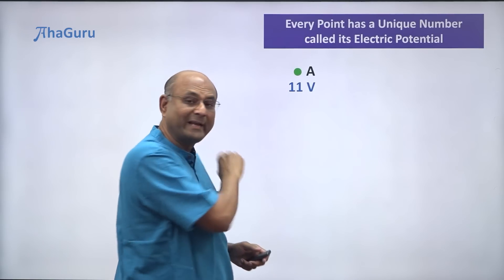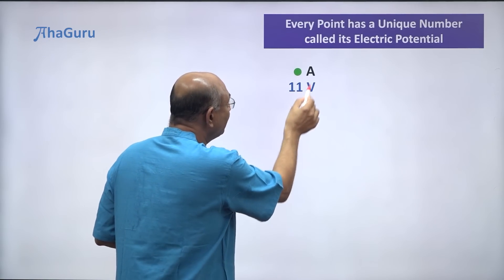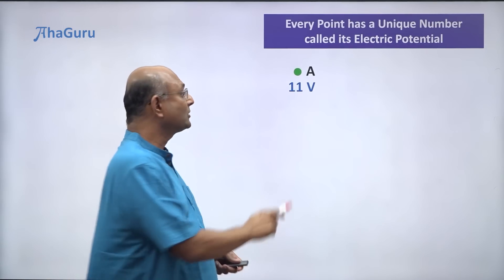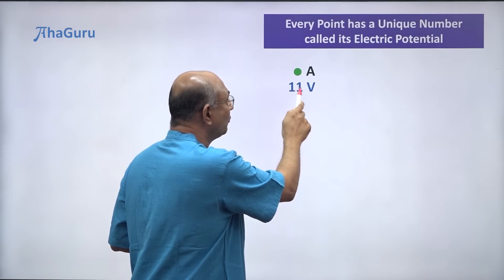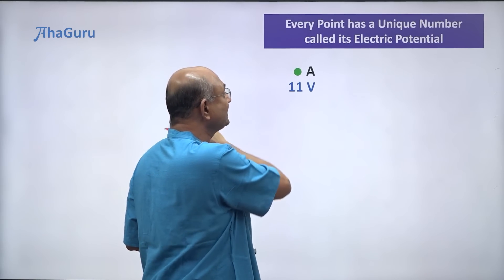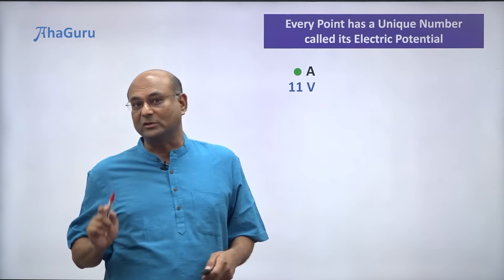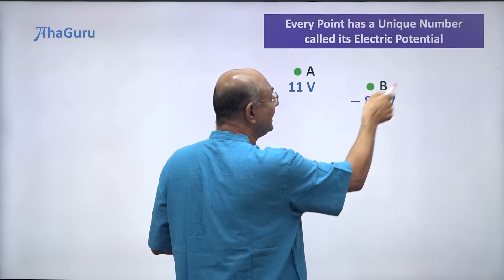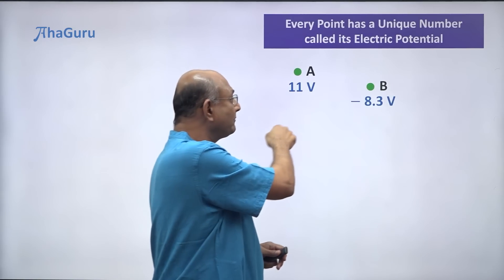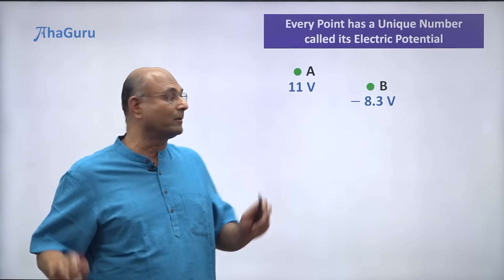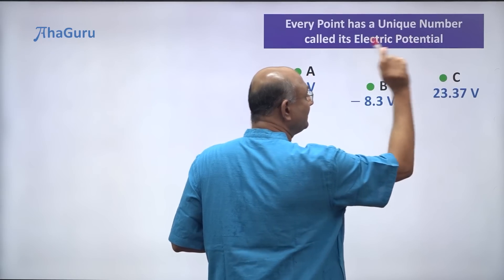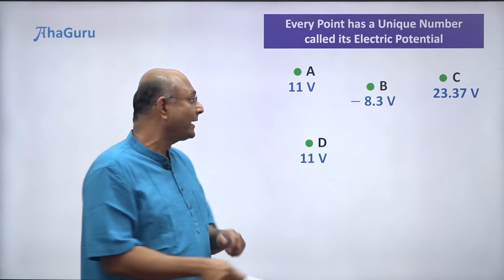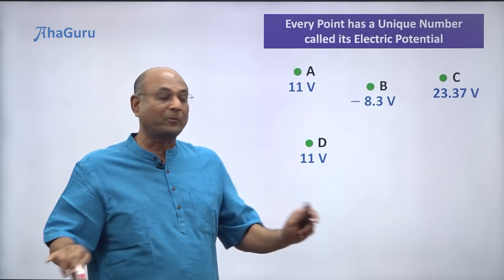What does this mean? Suppose I have a point A — its number is 11 volts. So the electric potential at A is 11 volts. If I pick another point B, its electric potential is minus 8.3 volts. Electric potential can be positive, negative, or zero — no problem. Another point C has 23.37 volts. A point D also has 11 volts. Two points can have the same potential — not a problem.